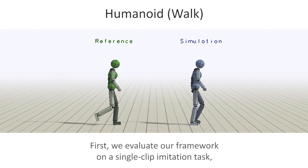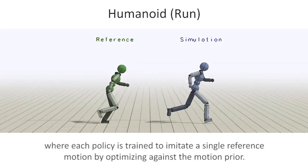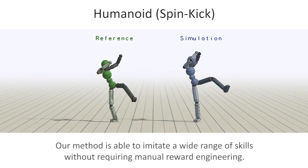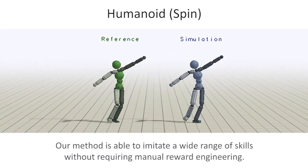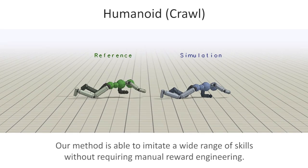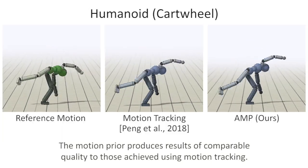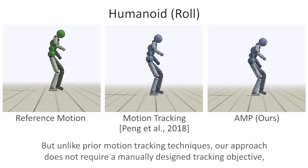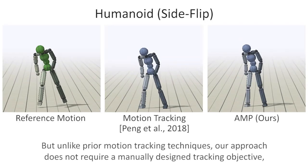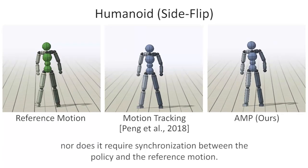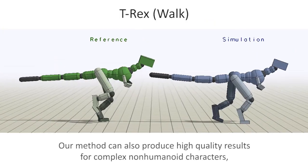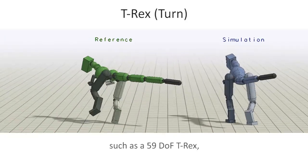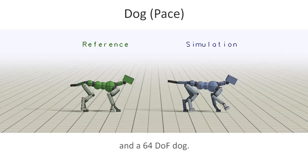First, we evaluate our framework on a single-clip imitation task, where each policy is trained to imitate a single reference motion by optimizing against the motion prior. Our method is able to imitate a wide range of skills without requiring manual reward engineering. The motion prior produces results of comparable quality to those achieved using motion tracking. But unlike prior motion tracking techniques, our approach does not require a manually designed tracking objective, nor does it require synchronization between the policy and the reference motion. Our method can also produce high-quality results for complex non-humanoid characters, such as a 59 degrees of freedom T-Rex and a 64 degrees of freedom dog.